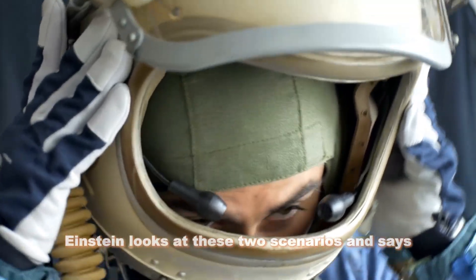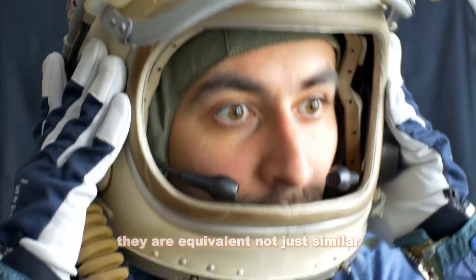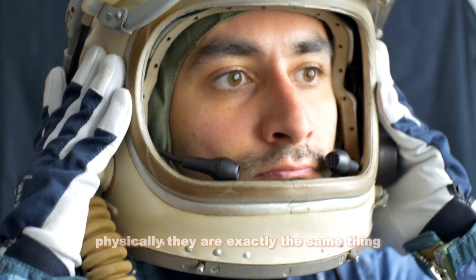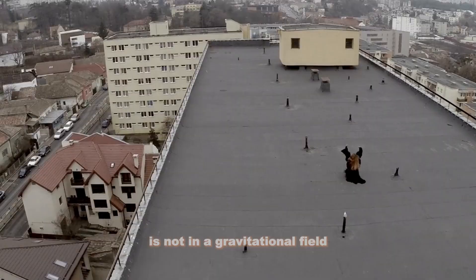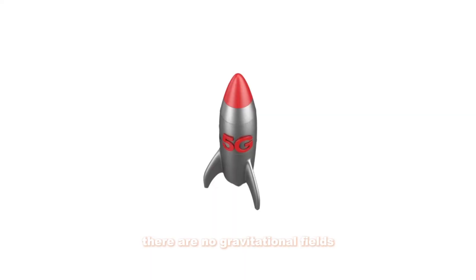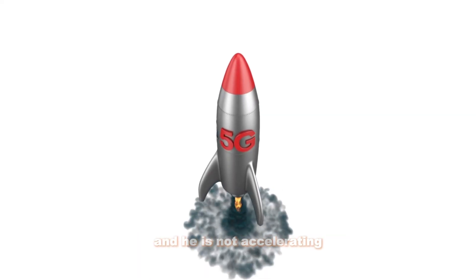Einstein looks at these two scenarios and says they are equivalent, not just similar. Physically, they are exactly the same thing. Which means the man falling from the roof is not in a gravitational field. There are no gravitational fields, and he is not accelerating.